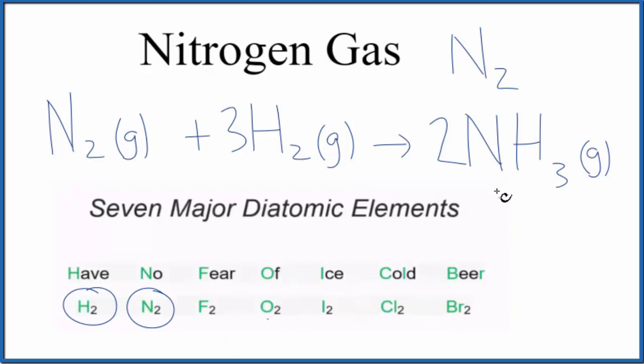Note that when nitrogen is bonded to something, it doesn't have to be diatomic. It doesn't have to be N2. Here we have NH3, just one nitrogen. It's when it's all by itself and it's called nitrogen gas, that it'll be N2.